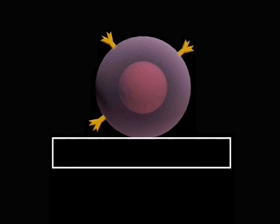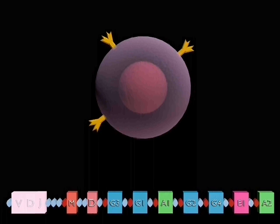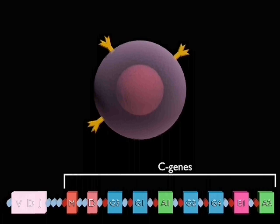Naive B cells which have not encountered their antigen initially express IgM as their surface receptor. The heavy chain of IgM is called a mu-chain, and a B cell makes a mu-chain by transcribing its recombined VDJ gene together with exons for the constant domains of the IgM heavy chain. These are called C genes. C genes for the other immunoglobulin classes lie downstream of those for the IgM.